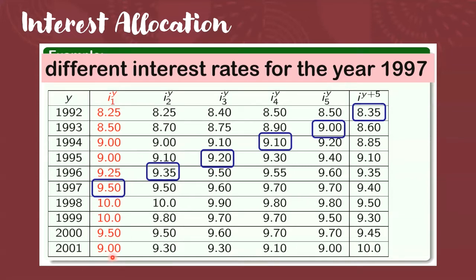So, para lang siyang stairs. So, if I ask you to get different interest rates for the year 2001, all you have to do is to start here at 9.00%. Tapos, gawa lang kayo ng stairs like this. Yan yung iba't ibang interest rates for the year 2001. Of course, make sure that you know how to use the notations. For example, ano yung notation for this rate? 9.80%. It is I_4^1998. Ayan o.